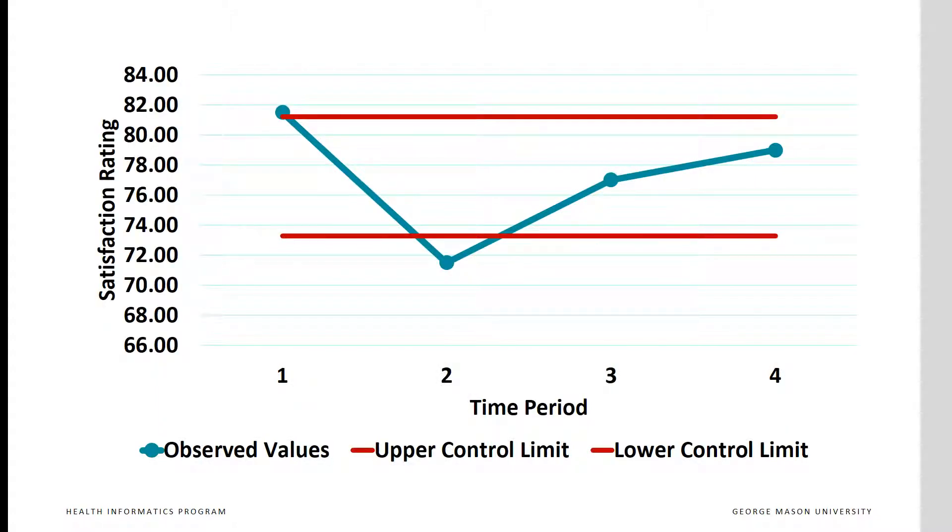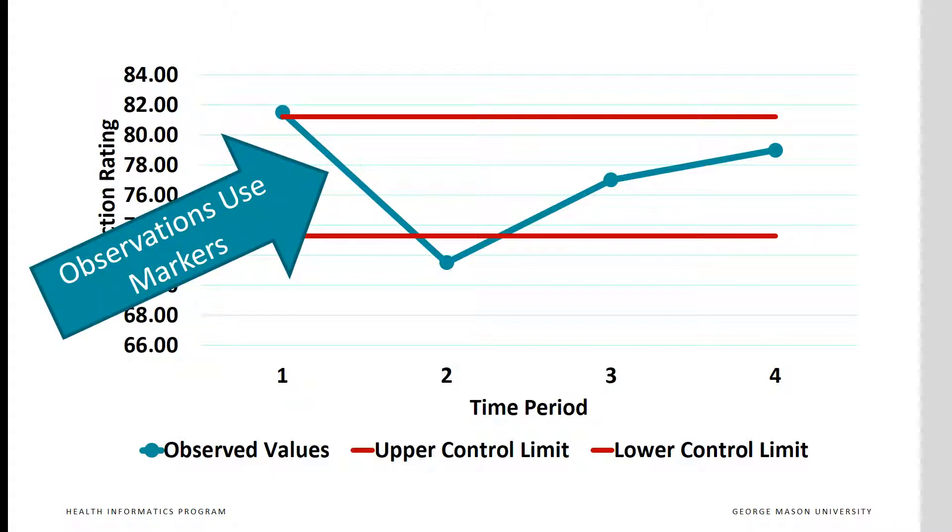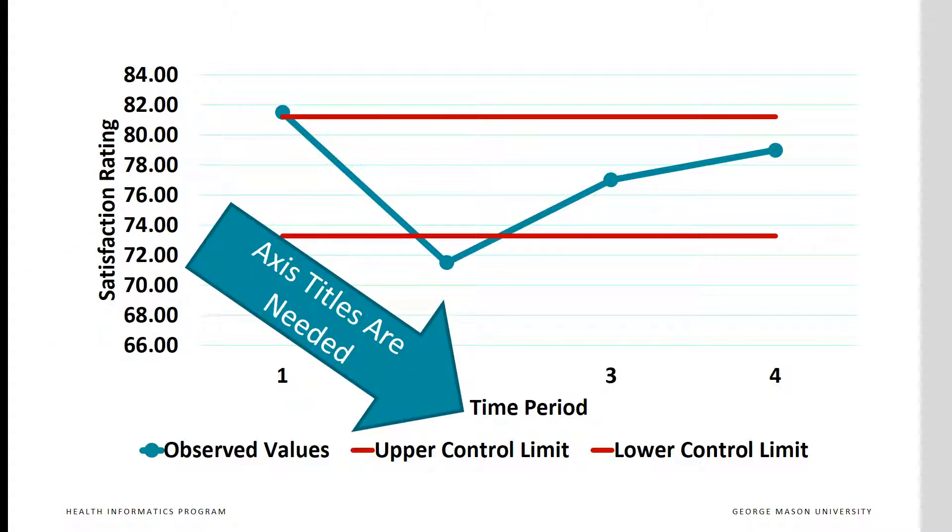This is the control chart we will get. Notice that the limits are in red. Notice the observations use markers, but the limits don't. Notice that the x-axis has a title and the y-axis has a title.